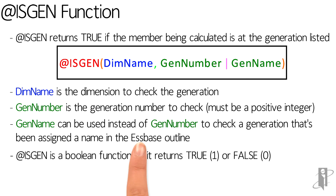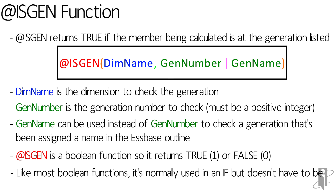isGen is a boolean function, so it returns 1 for true or 0 for false. Like most boolean functions it's normally used in an if statement, but it doesn't have to be.